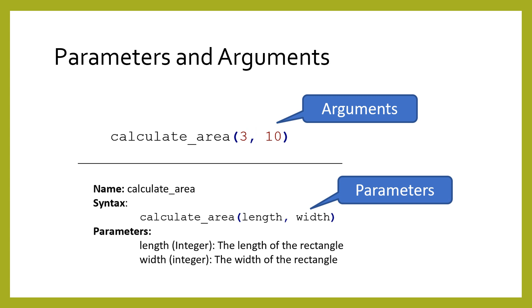The arguments that are passed into a function are also known as parameters. Parameters are the formal names that allow us to refer to the arguments of the function. In the example below, the arguments are 3, 10, and hello. The documentation tells us the corresponding parameters are x, y, and z.